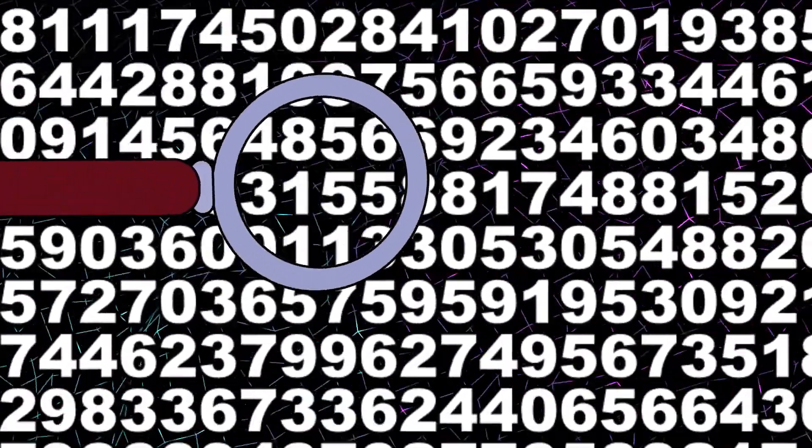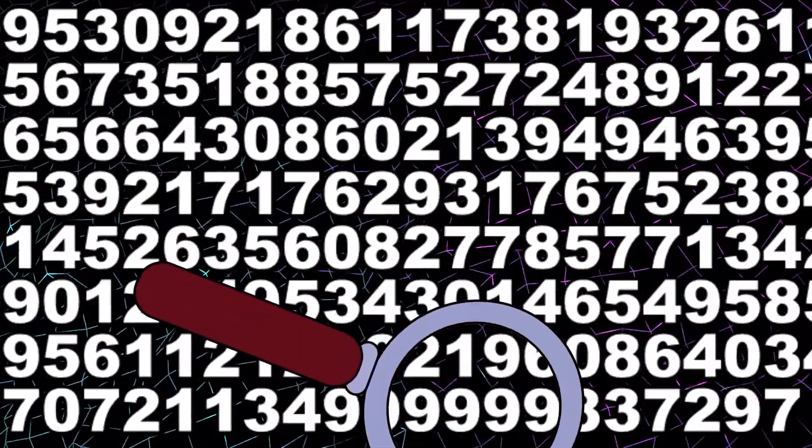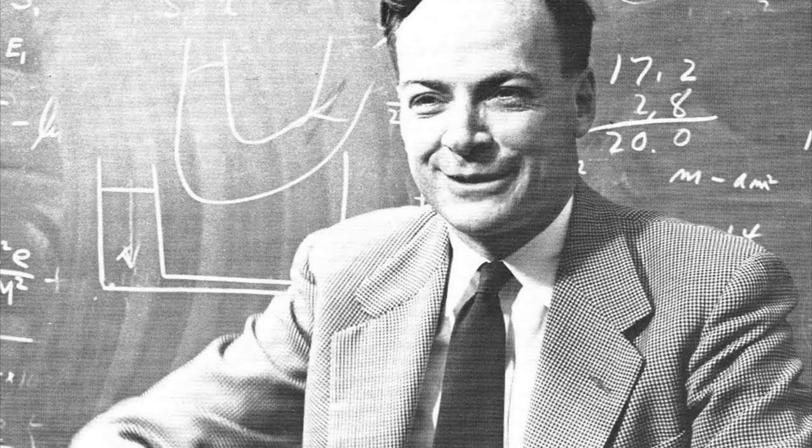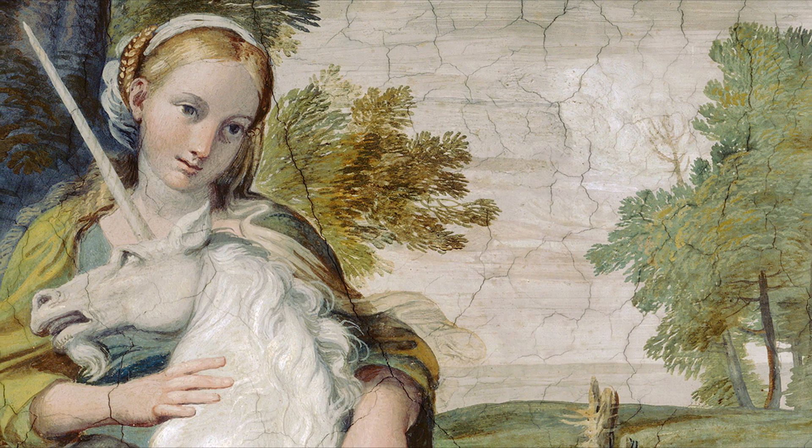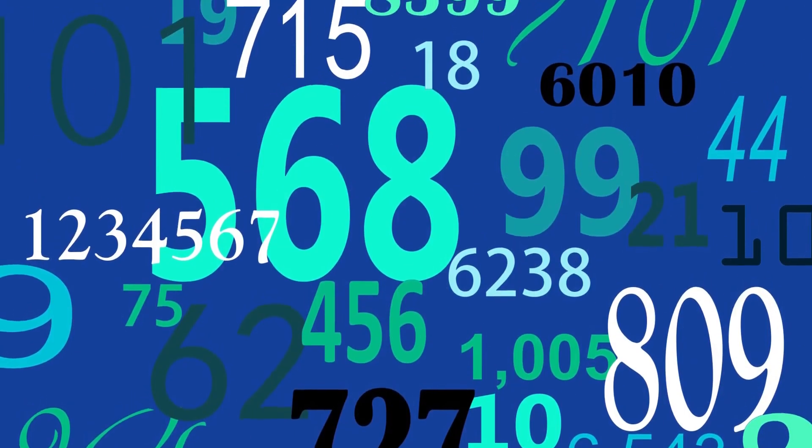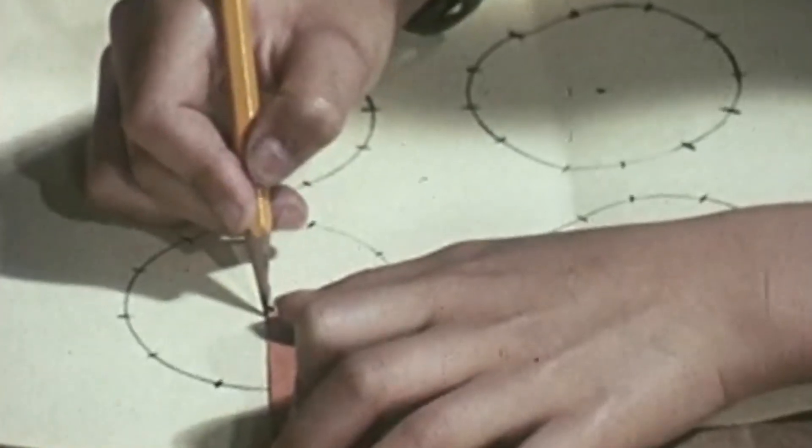Starting at the 762nd decimal place, pi has six nines. This is very famous in mathematics and it's called the Feynman point. And while it seems incredibly rare, sequences like this are expected to appear in a number like pi sooner or later.